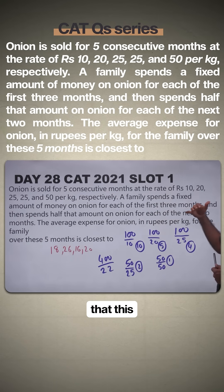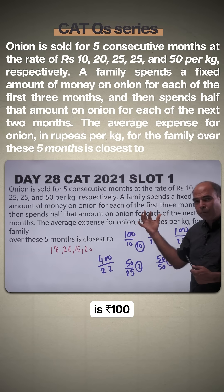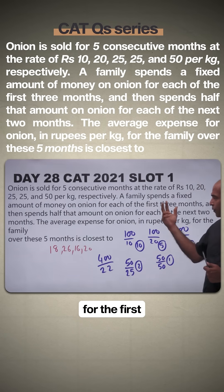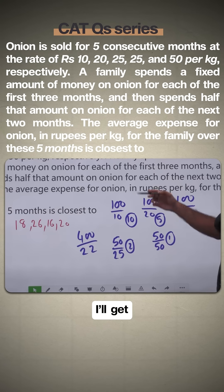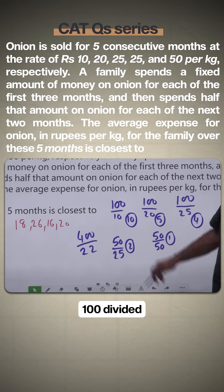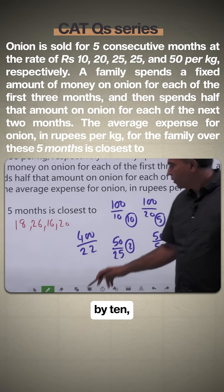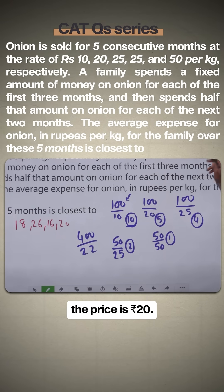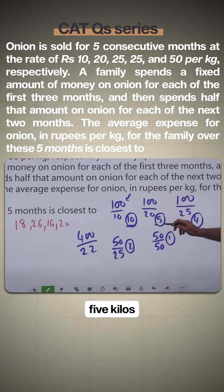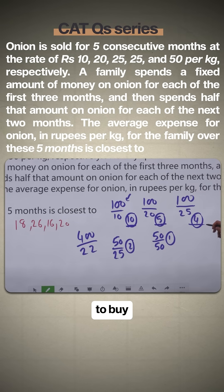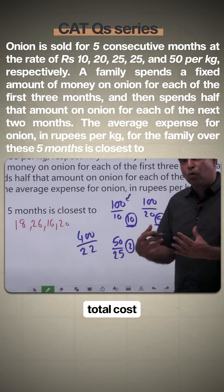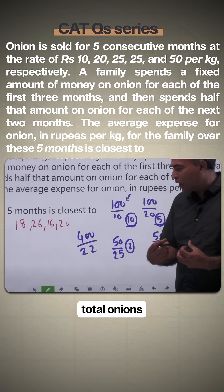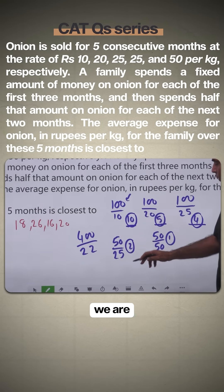Assuming the family spends 100 rupees every month for the first three months: in the first month at 10 rupees per kg, they get 10 kilos. In the second month at 20 rupees, they get 5 kilos. In the third month at 25 rupees, they get 4 kilos. We're looking at total cost divided by total onions bought to find the average price.